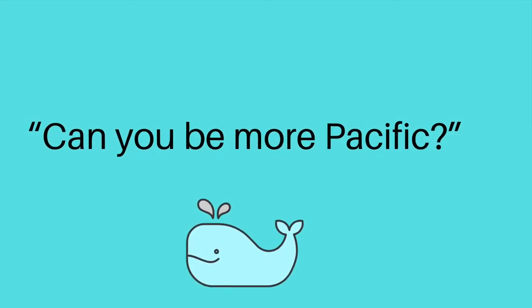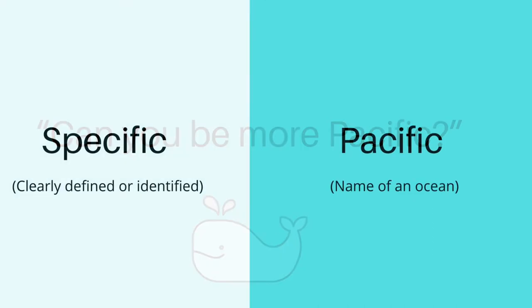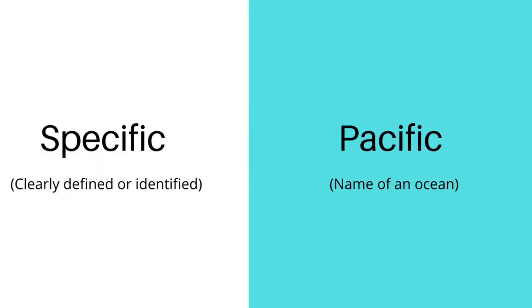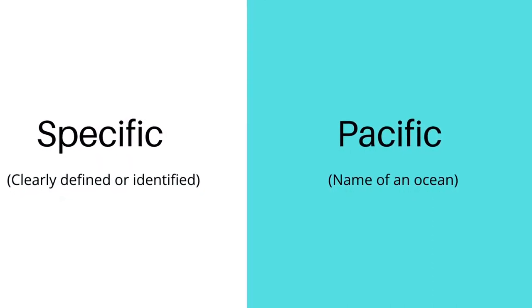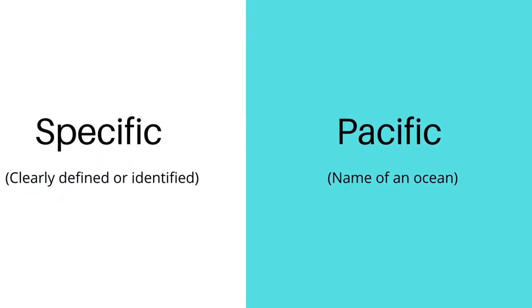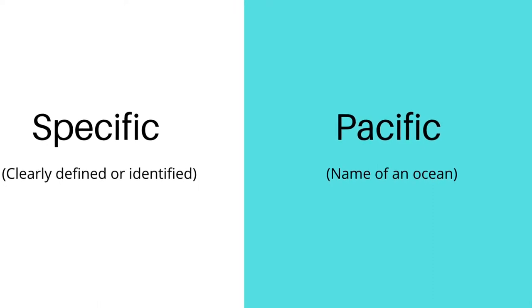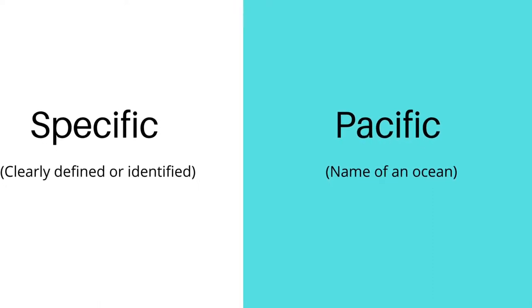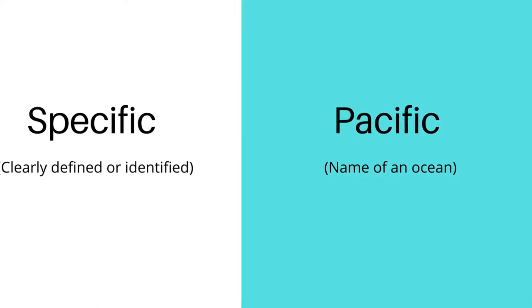Can you be more Pacific? Pacific is the name of an ocean. Pacific can also be an adjective meaning peaceful. The word which should have been used in this sentence is specific.